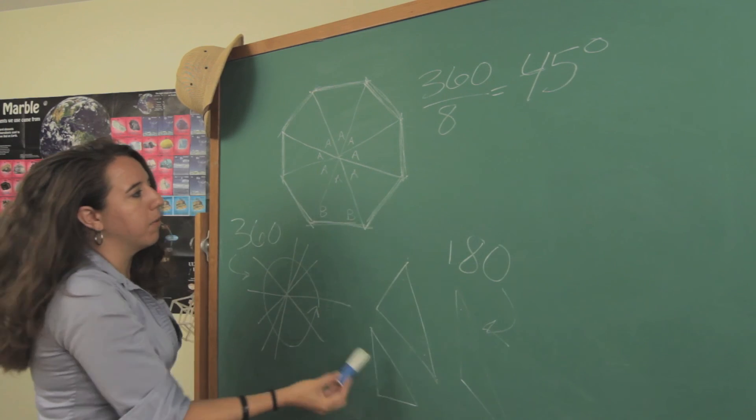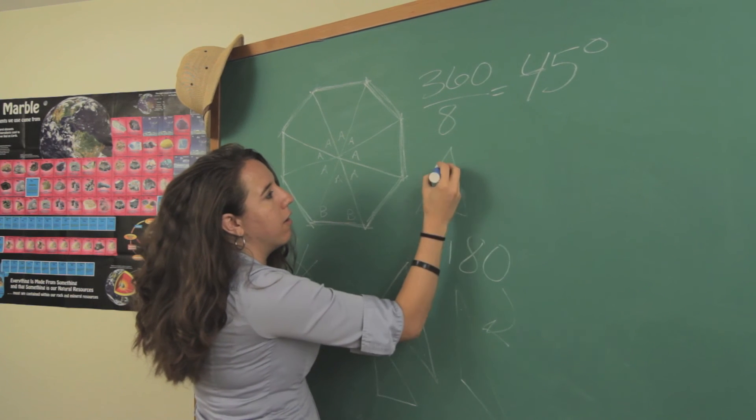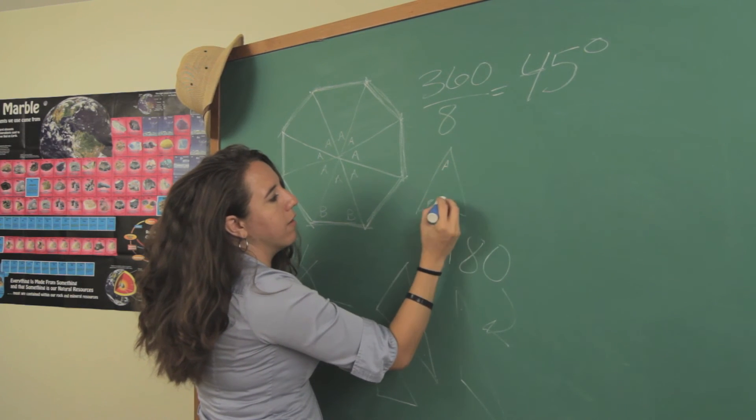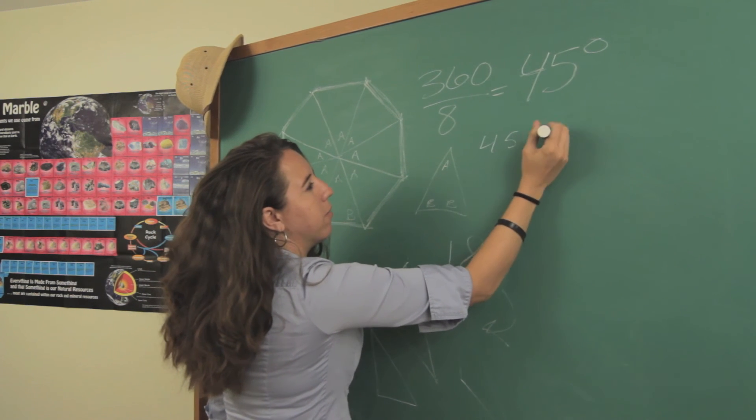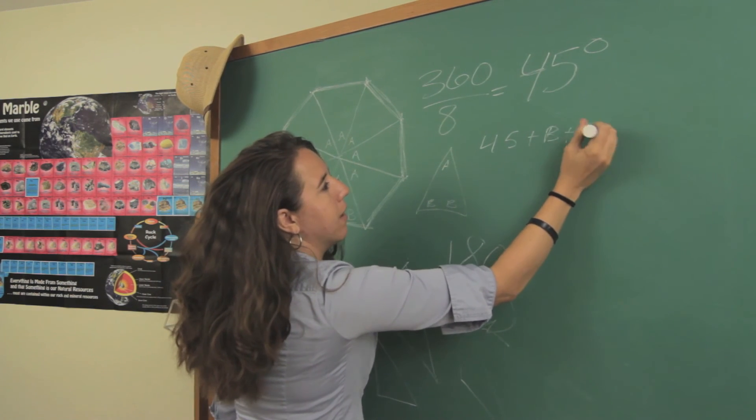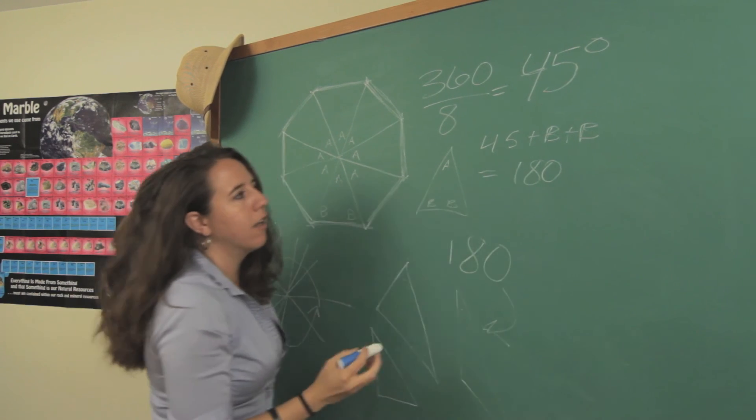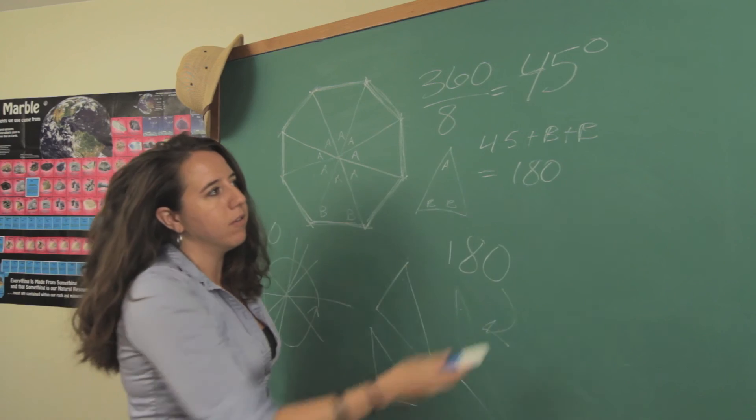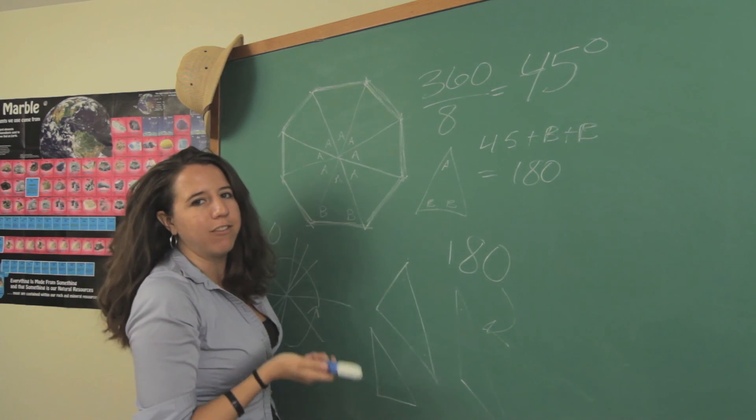Using this principle, we can draw a little mini version of one of our pizza slices and just say that 45 plus B plus B equals 180. From there, it's really simple to figure out what B is, and then you have all of the angles in question for your octagon.